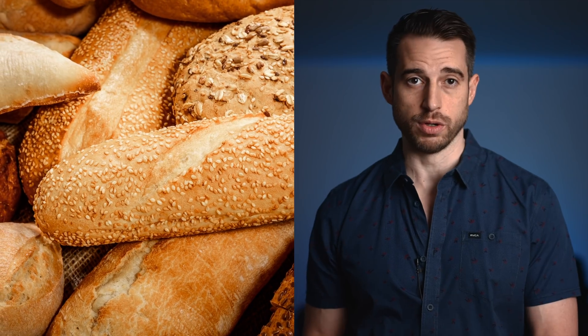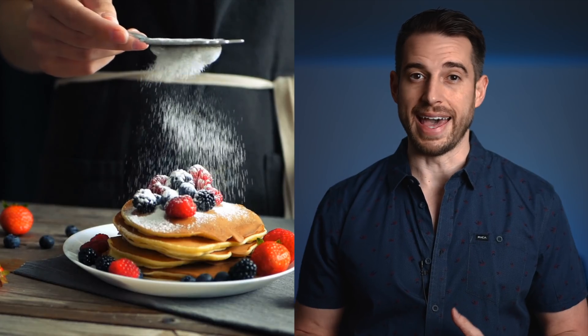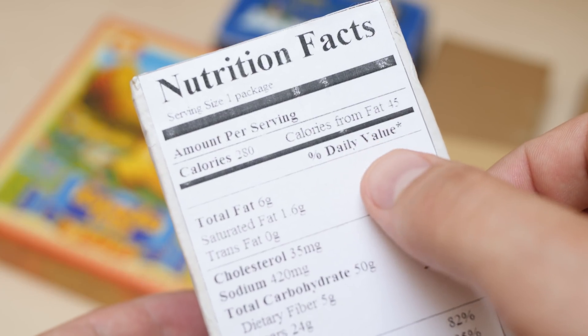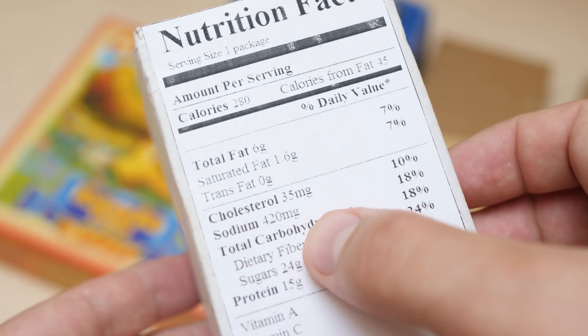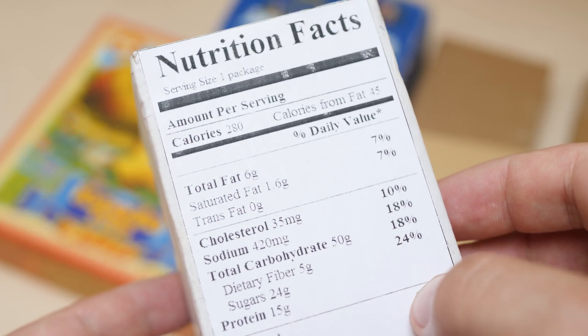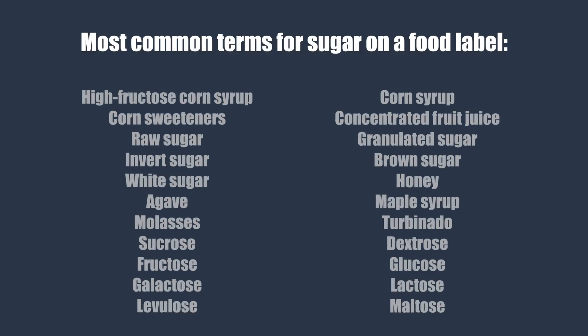Carbohydrates are found in all sorts of food and can come in both good and bad forms — whole intact grains, fruits, vegetables, legumes, and dairy like milk, yogurt, and cheese, as well as added sugar and refined grains. When you look at the nutrition facts label, you'll see carbohydrates listed, and under that, fiber and added sugar. There are all sorts of ingredients that are sugars in different forms — for example, high fructose corn syrup, molasses, honey, dextrose, and many more. In all, there are 262 names for different sugars.